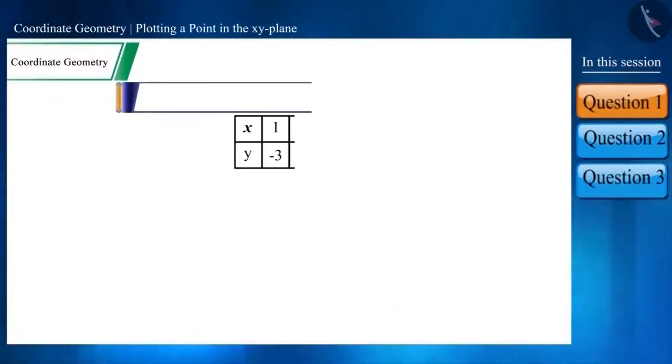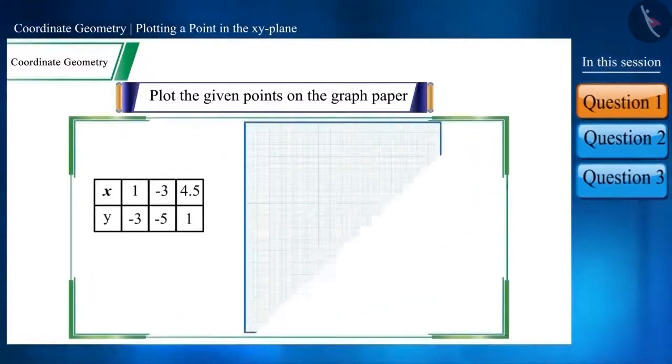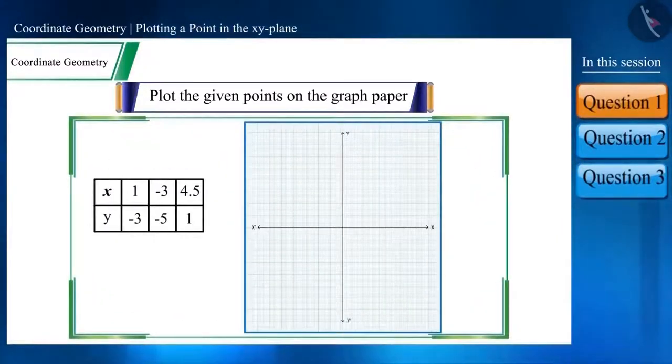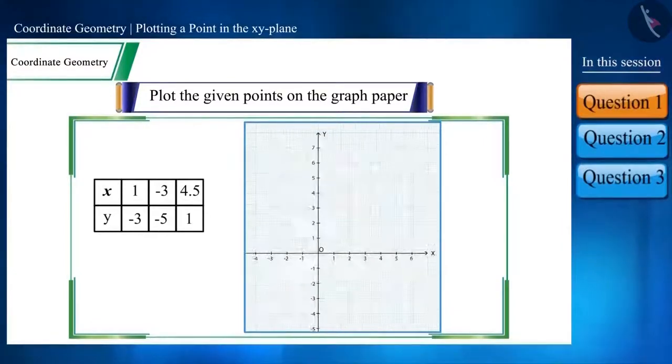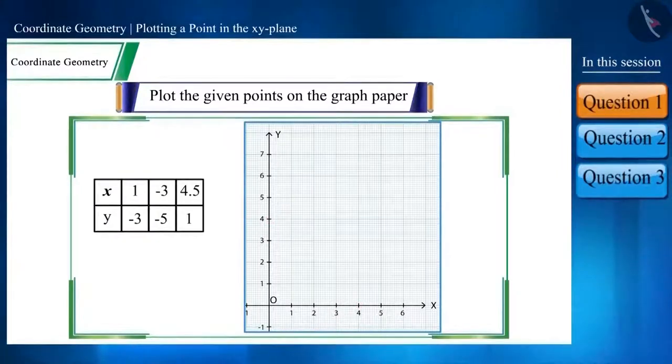Plot the given points on the graph paper. Let us draw the x and y axis on a graph paper. One important thing to note is that when we write numbers on the x and y axis, how many units we have to take for 1 cm depends on the coordinate points, which we call scale. And before plotting any coordinate point on the plane, we should set the scale.